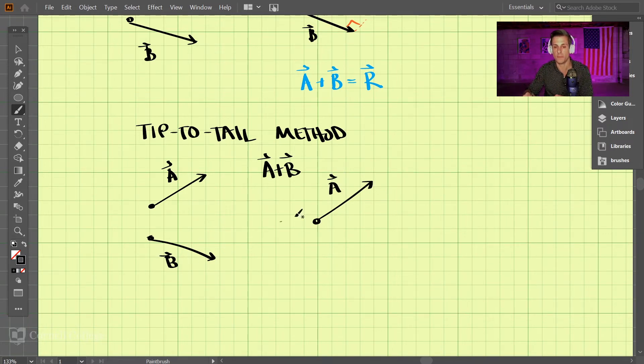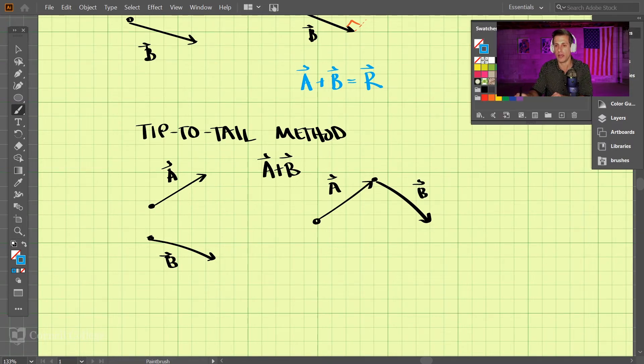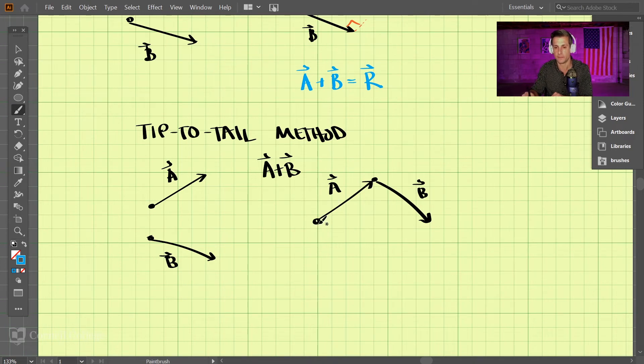And then we would place B at the tip of that. All right, so B starts here and goes down something like this, and that is B. And then we draw a resultant vector.